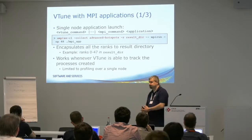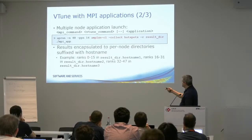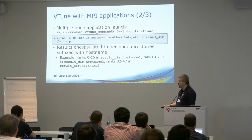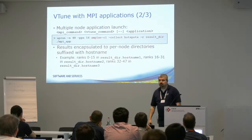The other thing that you can do is turn it around. You can also do aprun or srun. You run -n 48 -ppn 16 amplxe-cl collect hotspots into result dir with your MPI app. Now that's different — we are running 48 of these, 48 instances of the tool, 16 on each node, and what you will get is four result directories, one per hostname, one for each node, and each of the results will collect the performance results of 16 of your MPI ranks.